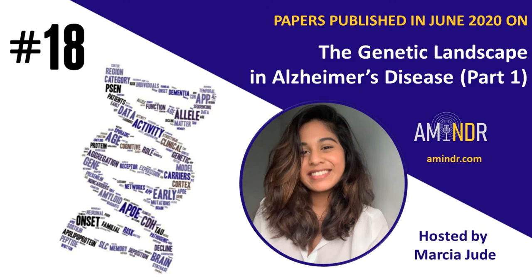The title of the next paper is Presenilin-1 and APP gene mutations in early-onset AD families from a southeast region of China. The first and last authors are Zhao and Peng, published in the journal Current Alzheimer's Research. The aim of this study was to investigate the spectrum of Presenilin-1, Presenilin-2, and amyloid precursor protein (APP) gene mutations in early-onset familial Alzheimer's disease patients in the Chinese population.